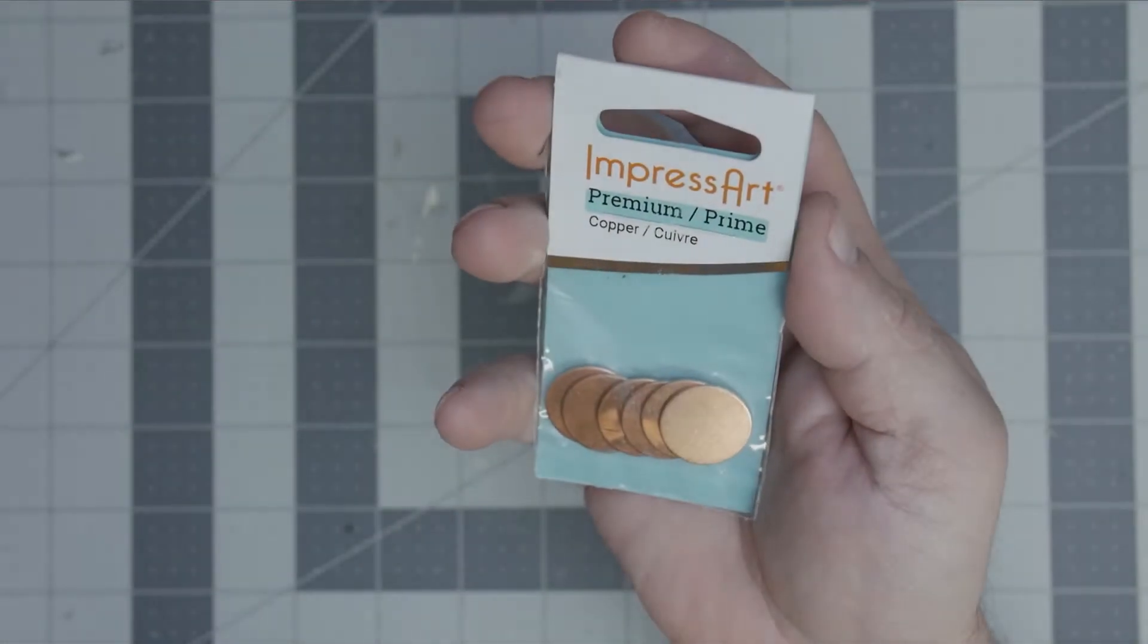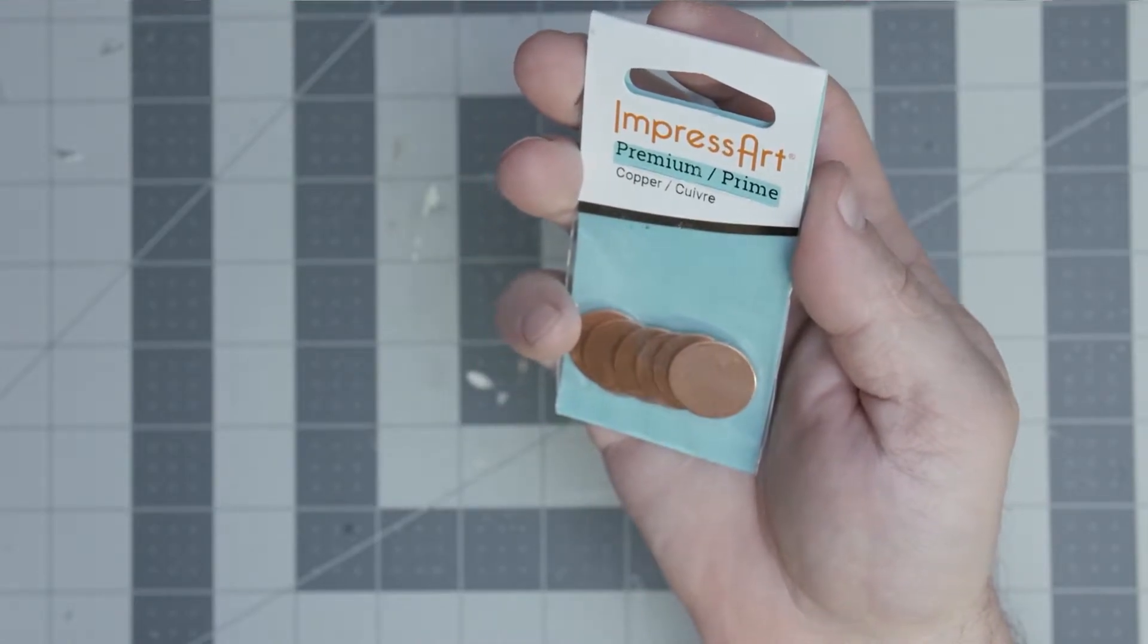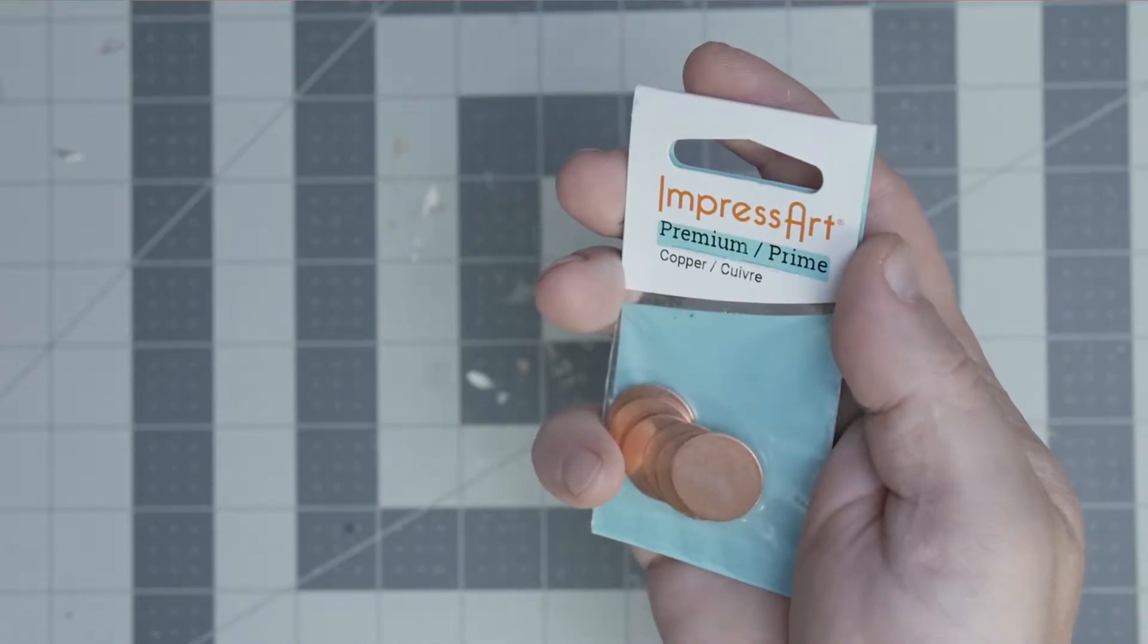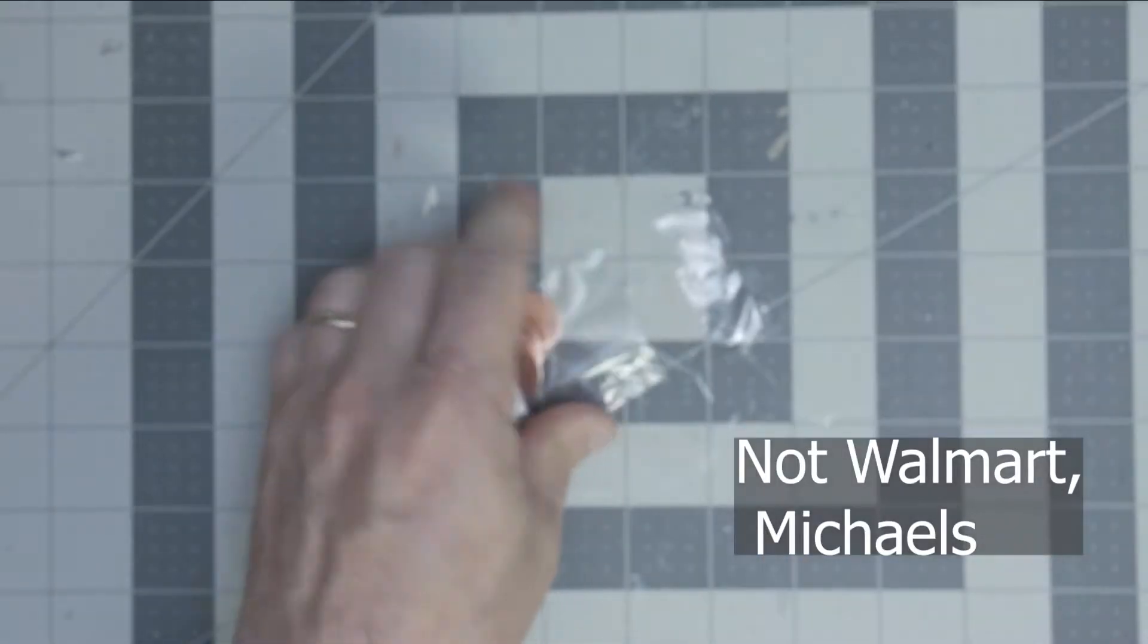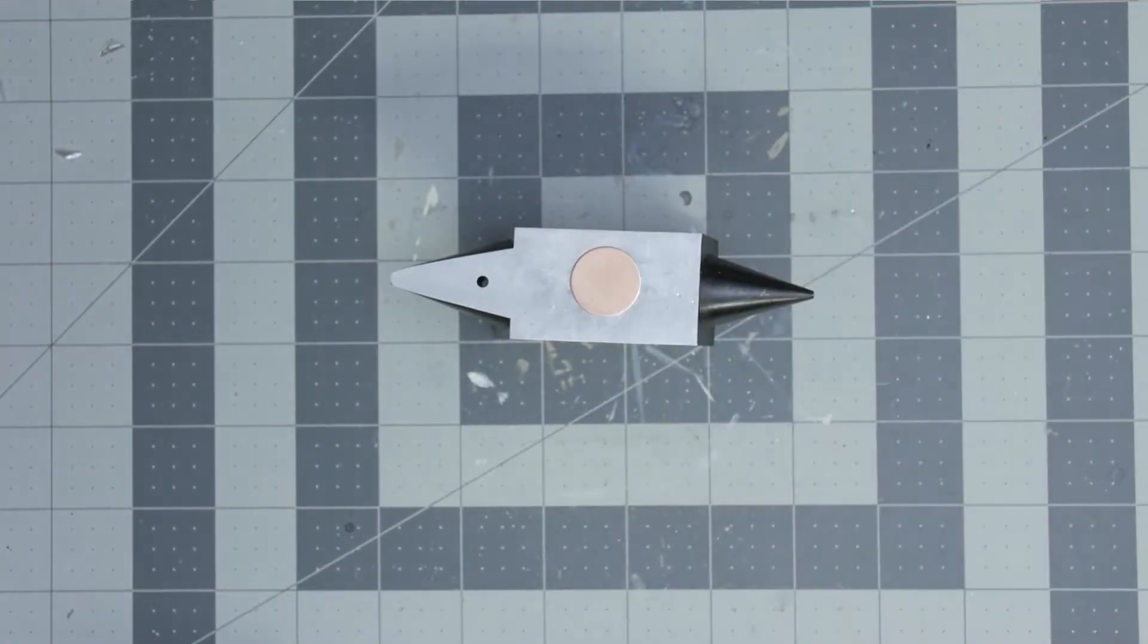And we're back with another episode of Tabletop That. Today we're looking at these Impress Art premium prime copper little plate things. I picked these up at Walmart for about five bucks. I'm going to make a brazier, you know, the thing that has coal in it that burns.